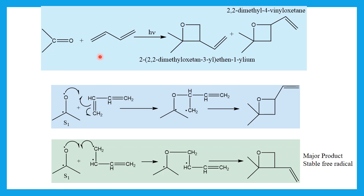When a ketone reacts with 1,3-butadiene, two possible isomers are formed. In the singlet state mechanism, one electron from the double bond forms a bond with one electron from oxygen, giving a 1,4-biradical intermediate. There are two possibilities: oxygen can form a bond with either the CH or CH2 carbon. In both cases 1,4-biradicals are produced. Since free radicals are electron-deficient, the radical on the secondary carbon is more stable than on the primary carbon. Therefore, one product is the major and the other is the minor.